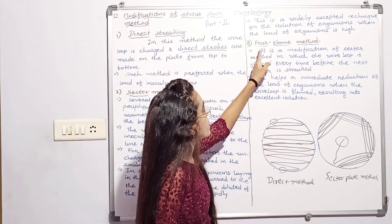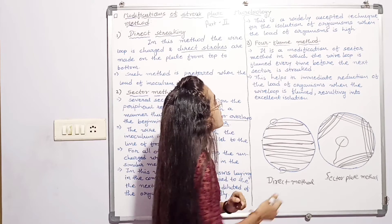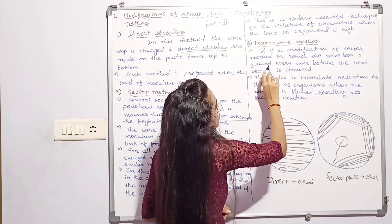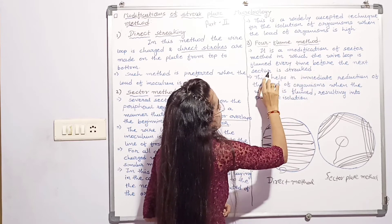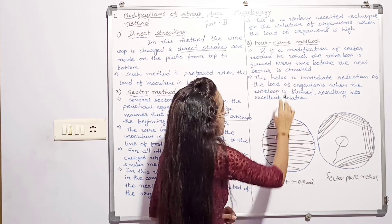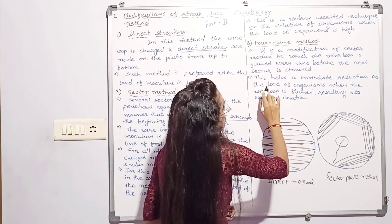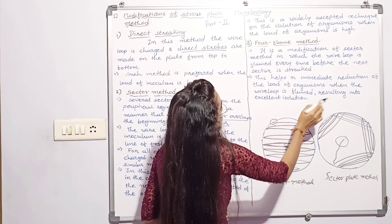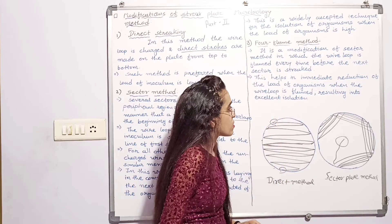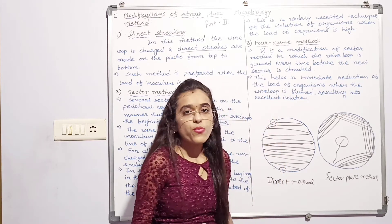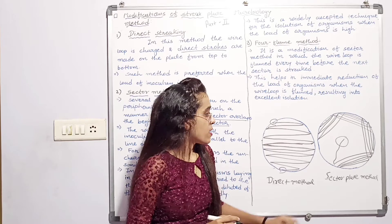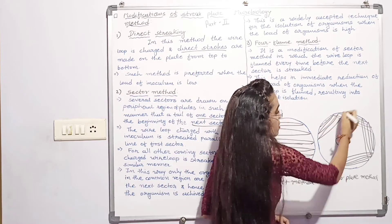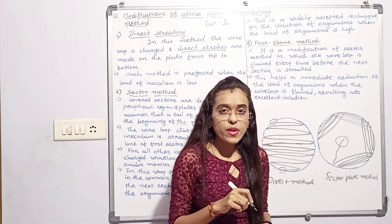Then another type is foreflame method. It is a modification of sector method in which the wire loop is flamed every time before the next sector is streaked. This helps in immediate reduction of the load of organism when the wire loop is flamed resulting into excellent results. In foreflame method, we have to strip one sector, again flame it,